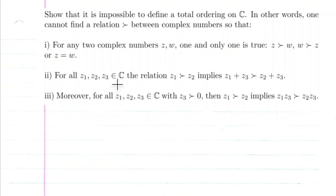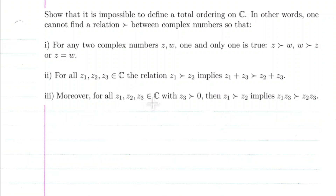The second axiom for a total ordering is that for all Z1, Z2, and Z3 in ℂ, if Z1 is bigger than Z2, that implies Z1 plus Z3 is bigger than Z2 plus Z3. The third axiom: for all Z1, Z2, and Z3 in ℂ, if Z3 is bigger than zero, then Z1 bigger than Z2 implies Z1 times Z3 is bigger than Z2 times Z3.